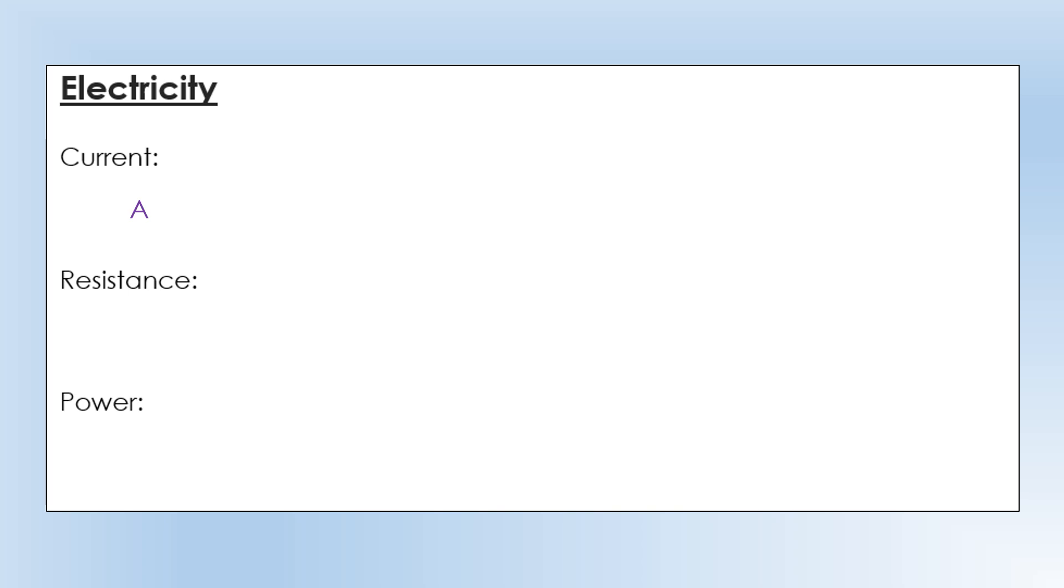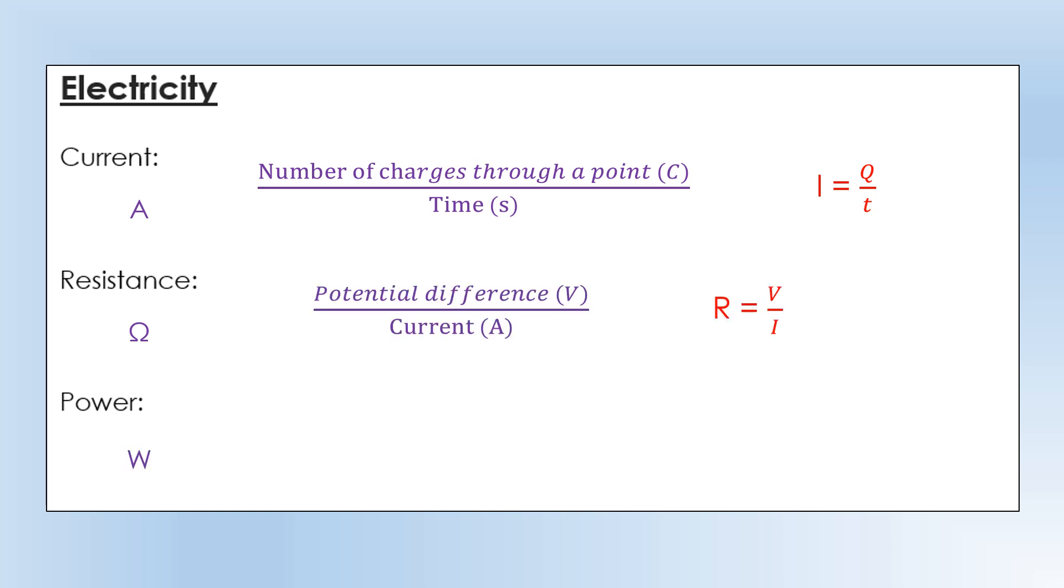Moving on to electricity. We have current, which is measured in amps or with a symbol A. Current is the number of charges through a point measured in Coulombs divided by the time in seconds. So I equals Q over T. Resistance measured in ohms using the symbol omega is potential difference divided by current. So R equals V over I.